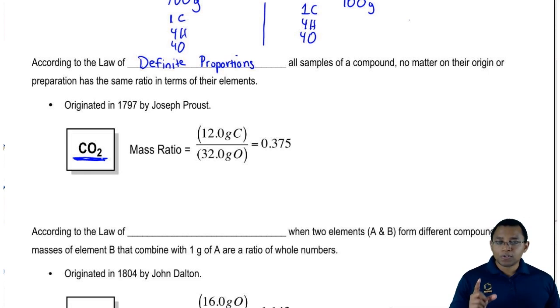They're different sources for CO2 but it doesn't matter. At the end of the day, we have CO2 being produced from both sources. We're going to say because of that, both will have the same mass ratio. That's what the law of definite proportions says.